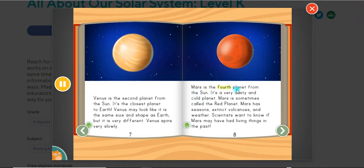Mars is the fourth planet from the Sun. It's a very dusty and cold planet. Mars is sometimes called the red planet. Mars has seasons, extinct volcanoes, and weather. Scientists want to know if Mars may have had living things in the past.